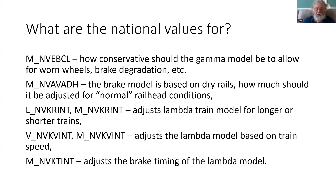NVEBCL is for the gamma model and indicates how conservative it should be - how much allowance should be taken for worn wheels, brake degradation, or anything else affecting braking on a case-by-case basis. NVAVADH is also for the gamma model, indicating how much adjustment should be made for non-dry rails - it's one value for the whole country but can account for typically wet or miserable conditions. The other three national values affect lambda trains: for longer and shorter trains, faster or slower trains, and the timing interval.